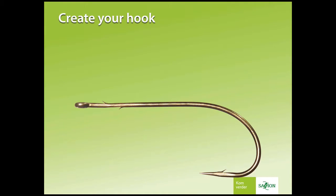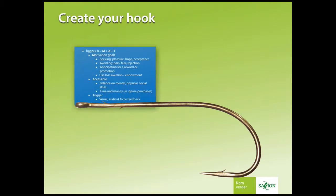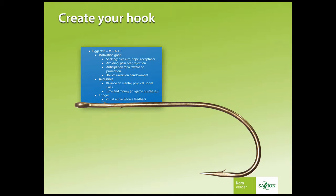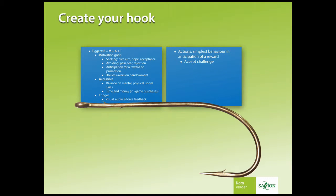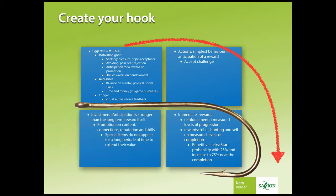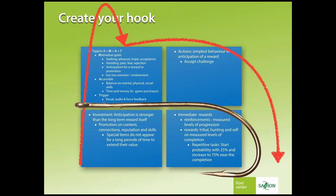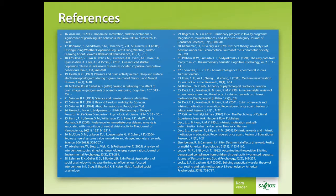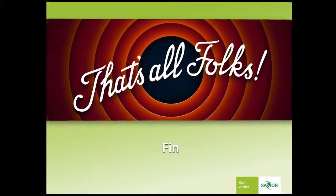Let's recap. To implement the hook system in your game: start with motivating goals, make sure everything is accessible for the player, and there is a trigger — the simplest behavior in anticipation of a reward. This direct reward of tribal, hunting, or self should be reinforced based on measured player progression. Now introduce anticipation for a long-term reward: a promotion on content, connections, reputations, and skill. This will generate the highest dopamine levels and ensures player retention and replayability. Here you find all the references used for this lecture. I hope you enjoyed it and see you next time.